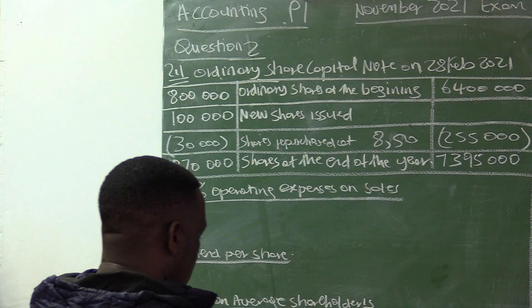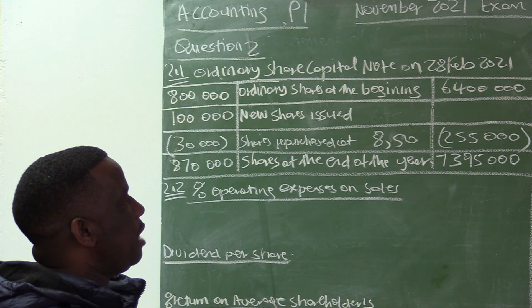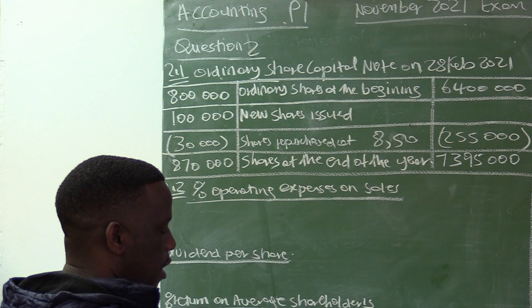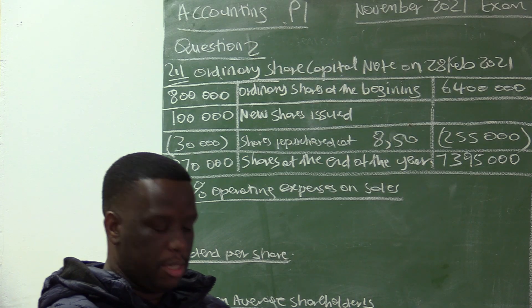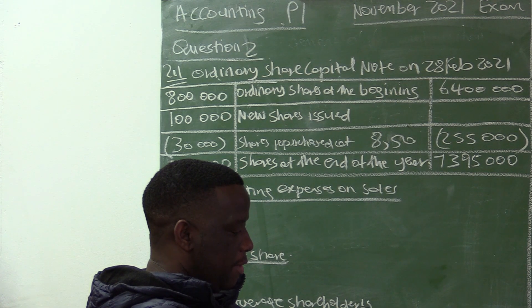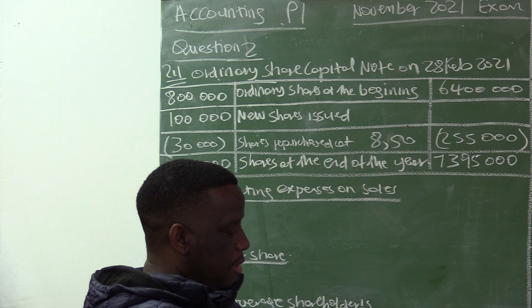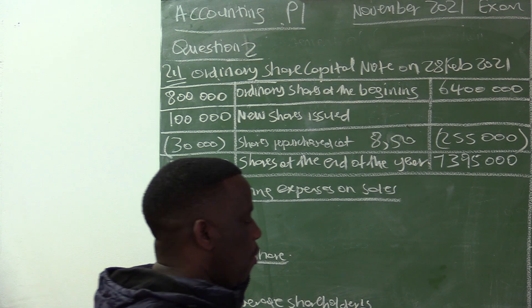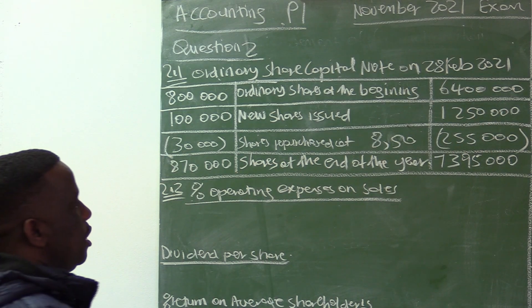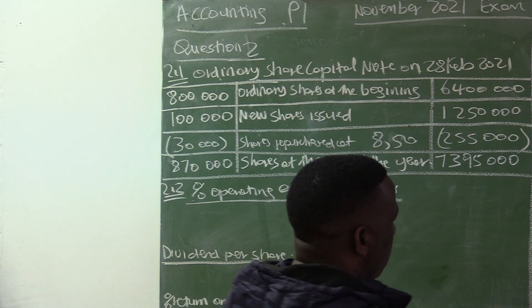80,000 multiplied by 850 is 255,000. The only amount still missing is for the new shares that were issued, so we work backwards: 7,395,000 plus 255,000 minus 6,400,000 equals 1,250,000. So the amount for the new shares issued is 1,250,000.